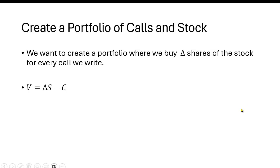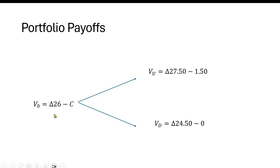What we want to do is create a portfolio where we buy delta shares of the stock for every call we write. This portfolio is going to have a value equal to the number of shares of stock we have minus the value of the call. The number of shares we have times the price per share minus the value of the call. So we've set this up here. This is the value of time period zero. We have delta times the price 26 minus C. We want to figure out what C is.